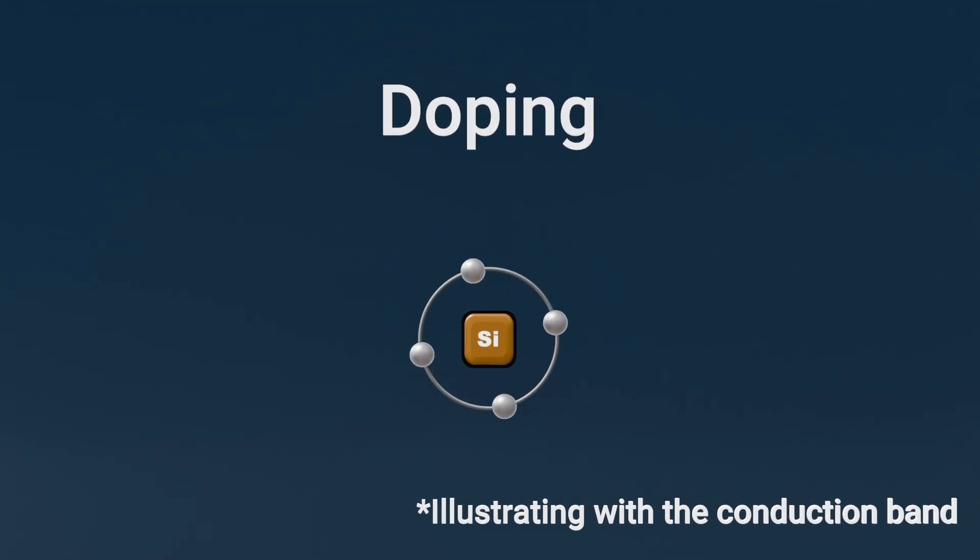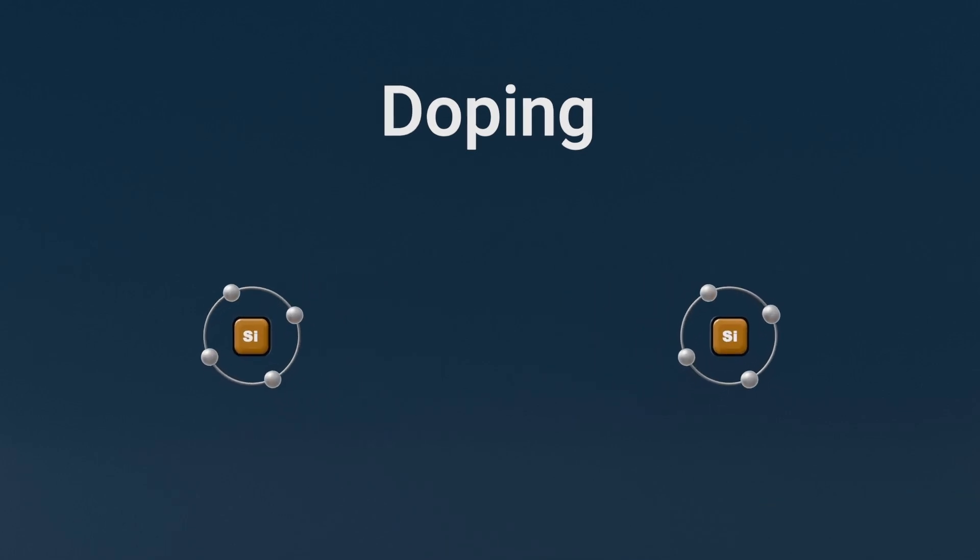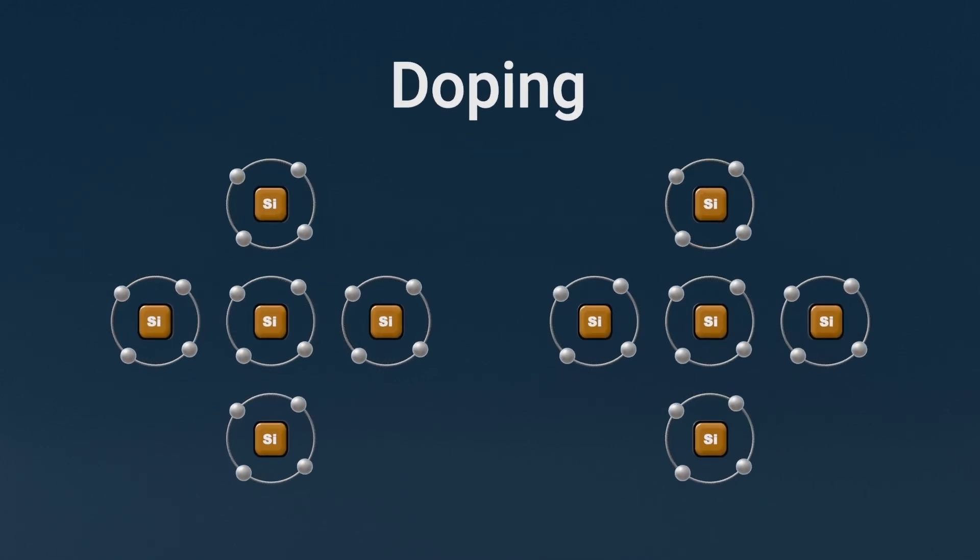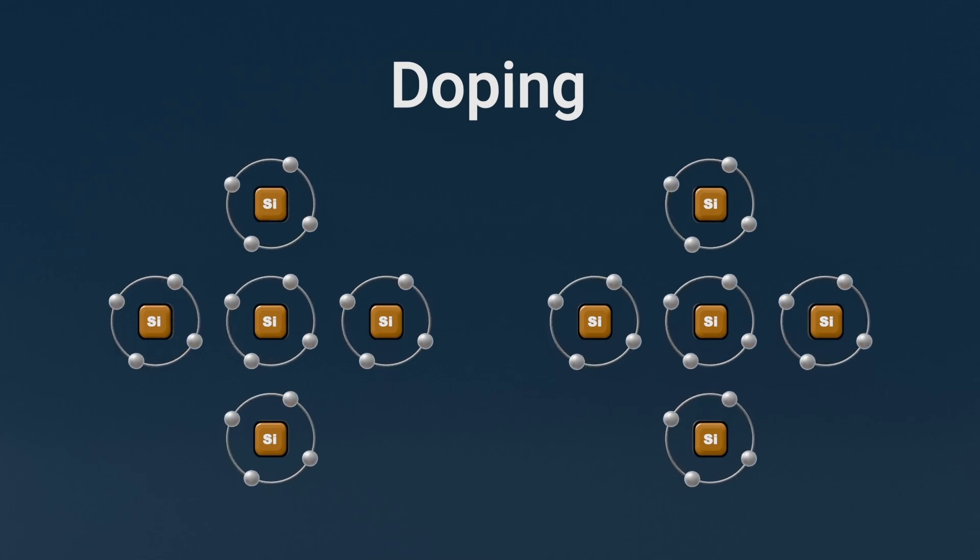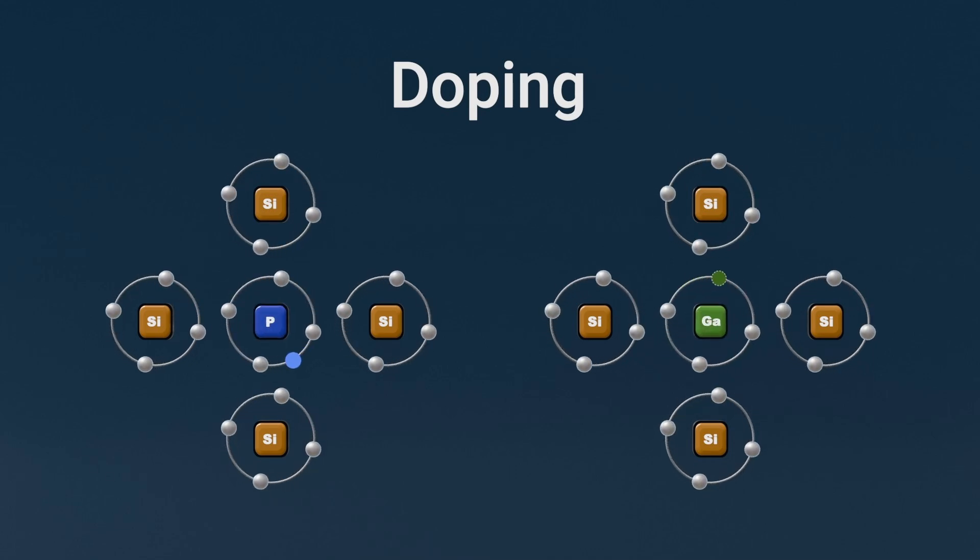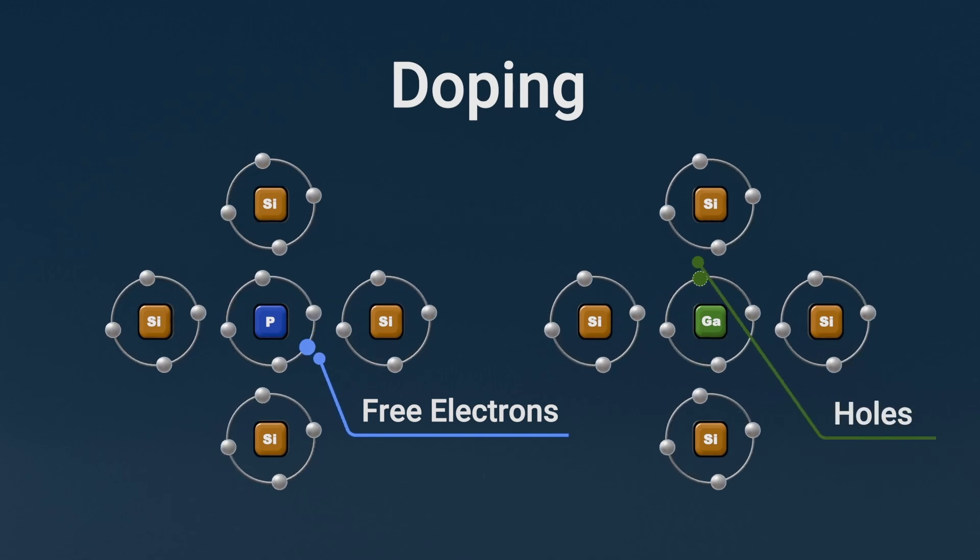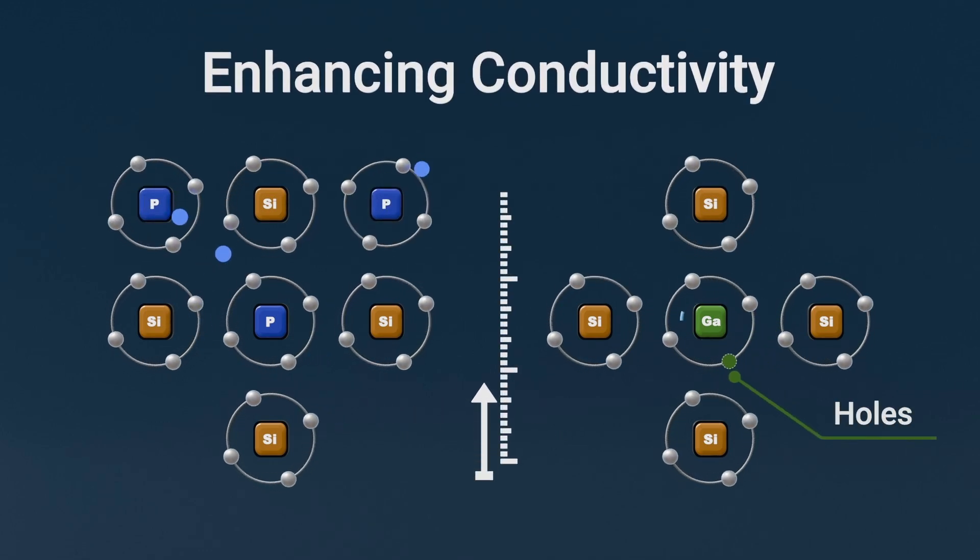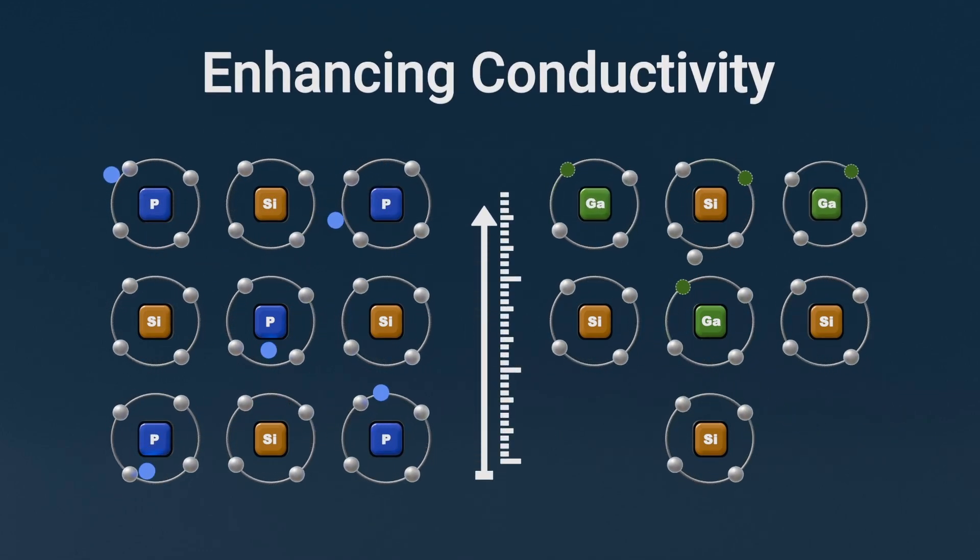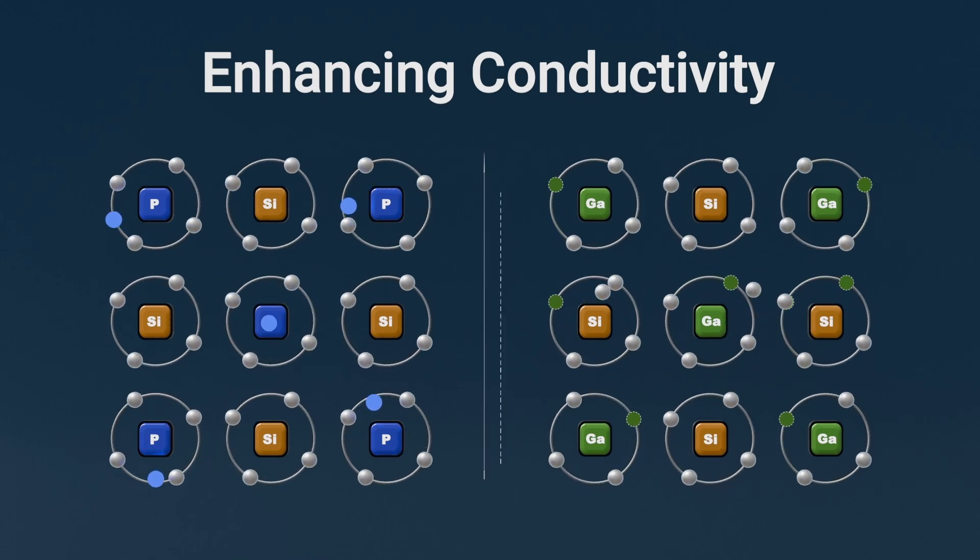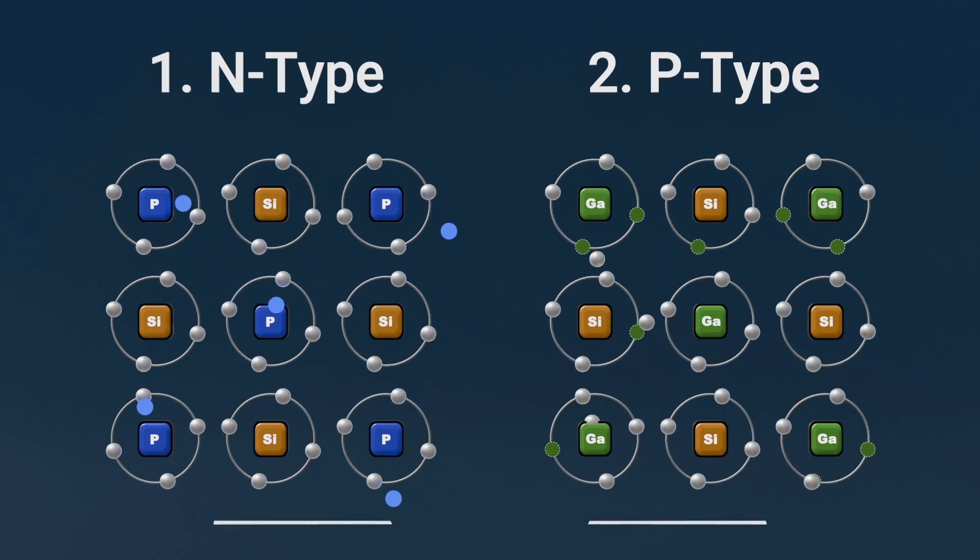One of the most fascinating aspects of semiconductors is that their conductivity can be modified through doping, which alters the carrier concentration and mobility by introducing impurity atoms. These dopants create free electrons or holes, enhancing the semiconductor's ability to conduct electricity.